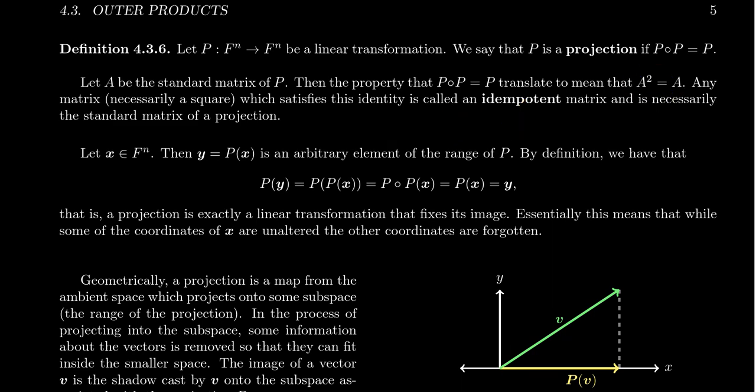Now if a matrix has this property — A squared equals A — we call this an idempotent matrix. This is basically a Latin phrase saying that the power is itself, so when you take a power of A you get back the original matrix A. Every idempotent matrix is the standard matrix representation of a projection map, and every projection is represented by an idempotent matrix.